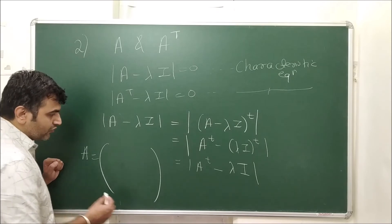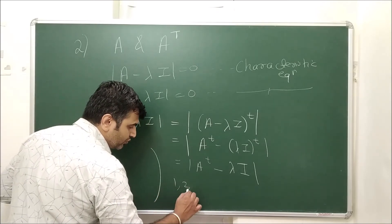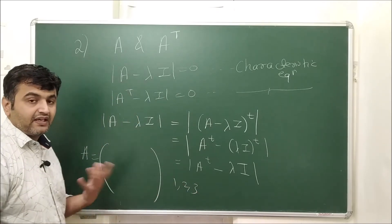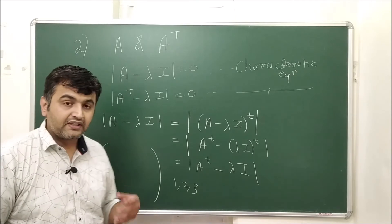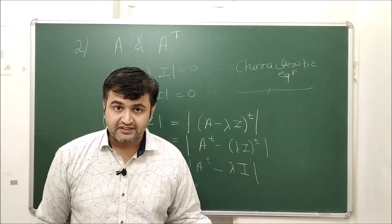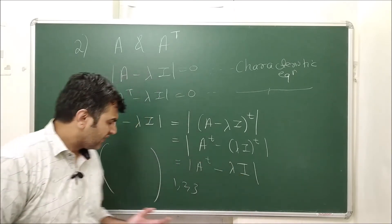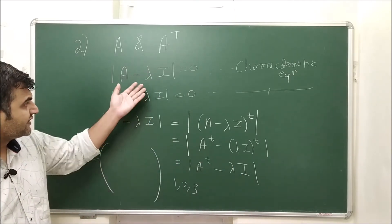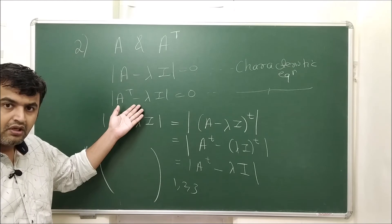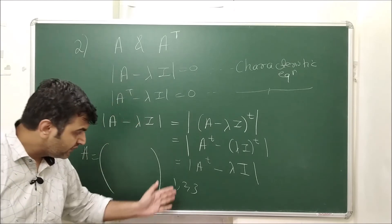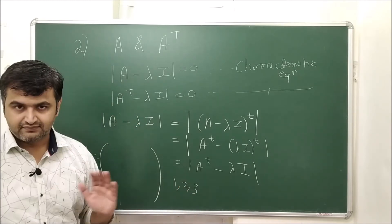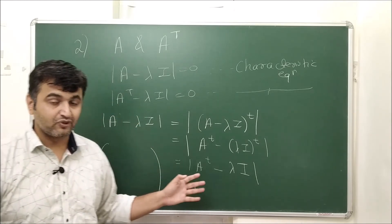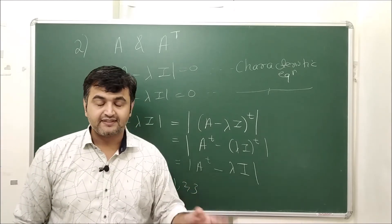So if someone tells you matrix A has eigenvalues 1, 2, and 3 and asks for the eigenvalues of A transpose, there's no need to compute A transpose and solve again — the answer is simply 1, 2, 3. That's the second property.